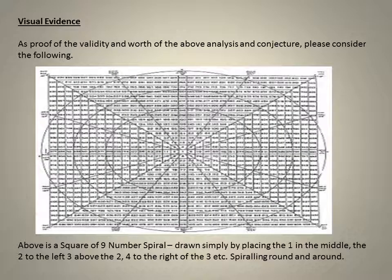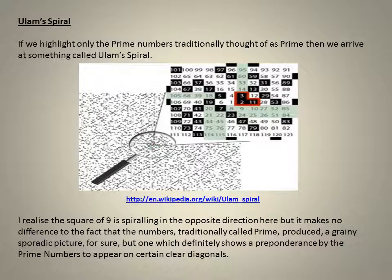As proof of the validity and worth of the above analysis and conjecture, please consider the following. Above is a square of 9 number spiral drawn simply by placing the 1 in the middle, the 2 to the right, 3, 4, etc., spiralling round and round. And now if we highlight only the prime numbers traditionally thought, then we arrive at something called Ulam Spiral. It makes no difference to the fact that the numbers traditionally called prime definitely shows a preponderance by the prime numbers to appear on certain clear diagonals.